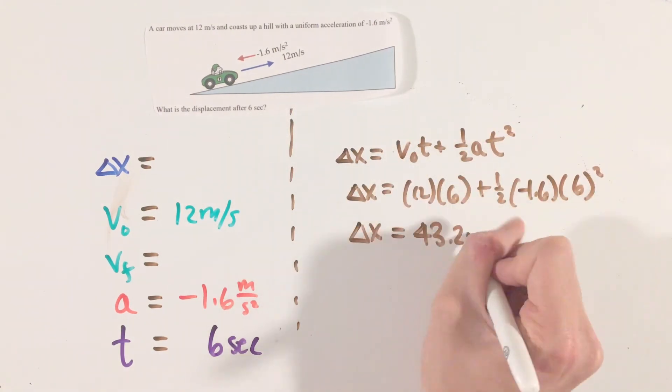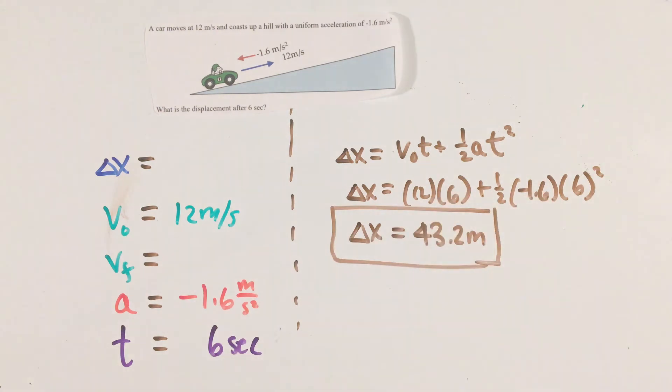With that being said, equation 3 has all of the variables given to us, as well as the one we're solving for, and we can once again plug and chug to arrive at our answer.